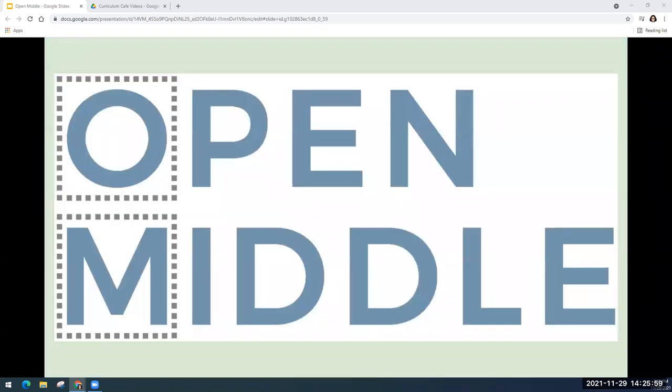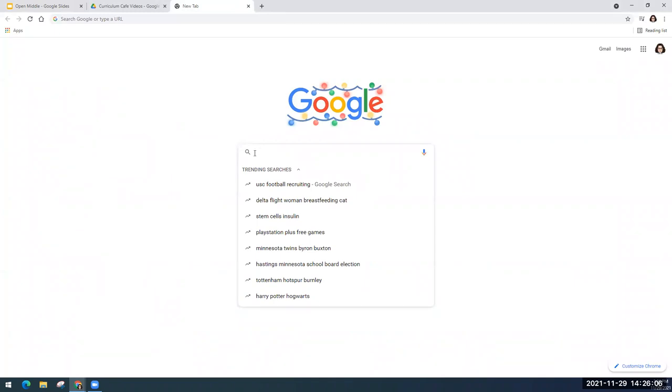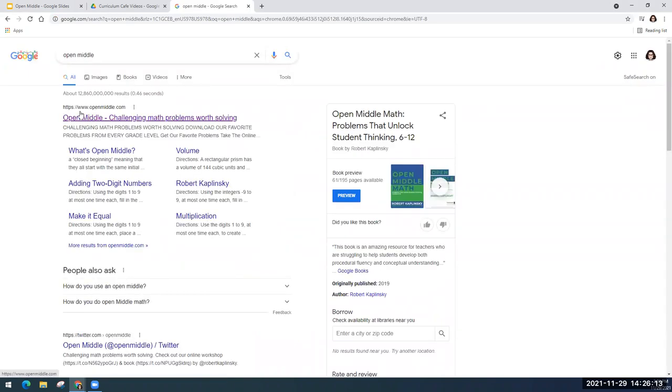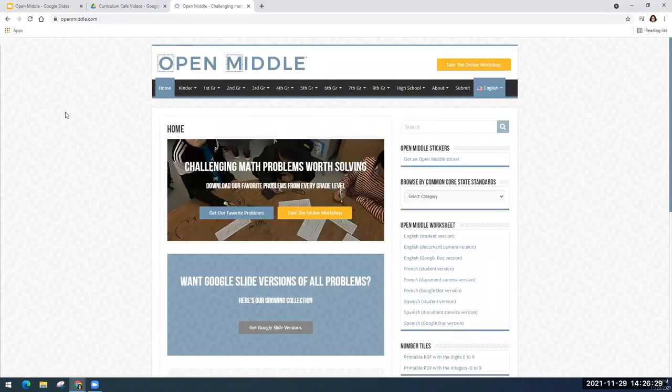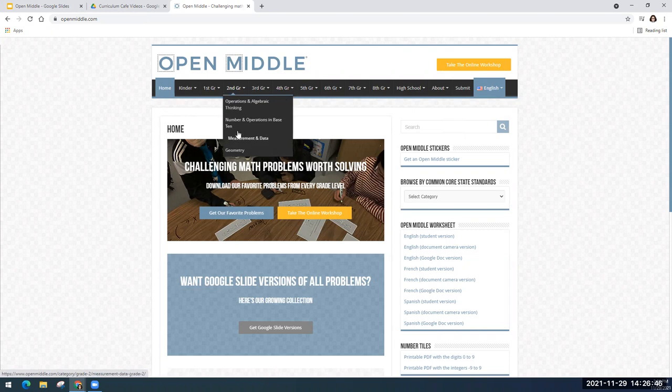So let's get into the open middle website so that you can see how to access these problems. So if you open a Google browser here, I'm just going to search open middle. And it should be the first link that you get here. So it's just www.openmiddle.com. As soon as you click on here, you'll see that Robert Kaplinski has dedicated an entire website to these open middle problems. And so you'll see up at the top that you have all the different grade levels. And I'll tell you these are separated by grade level. And then he also has them by strand for the standards. And so you can really pay attention to the types of problems you give your students.